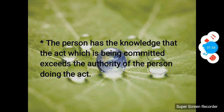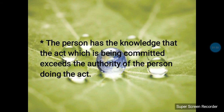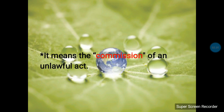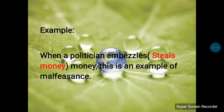A person committing malfeasance is exceeding his own jurisdiction. For example, if a person had a duty not to ignore any unlawful act committed in front of him and he ignores it, he is exceeding his authority. In malfeasance, unlawful acts are committed — for example, when a politician embezzles money, that is malfeasance, because the politician exceeds his limit by stealing money, which is an unlawful and intentional act.